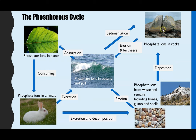Some of that material will go towards creating phosphate ions in rocks. Particularly with guano, over time deep deposition occurs, forming phosphate ions in rocks. Those rocks can then be eroded, returning phosphate ions back into oceans and soil, and additional fertilizers applied to land can run off into the oceans. Sedimentation from oceans and rivers also builds up over thousands of years to create rocks containing phosphate ions.